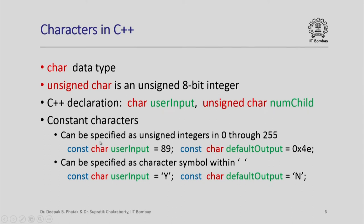Constant characters can be specified as unsigned integers in the range 0 through 255. For example, you could say const char user_input is the decimal 89 — the character encoded by the decimal number 89 — or const char default_output is the character encoded by the hexadecimal number 4E. Alternatively, constant characters can be specified as a character symbol within single quotes, such as const char user_input is 'Y' and const char default_output is 'N'. Decimal 89 is the code for uppercase Y, and hexadecimal 4E is the code for uppercase N.